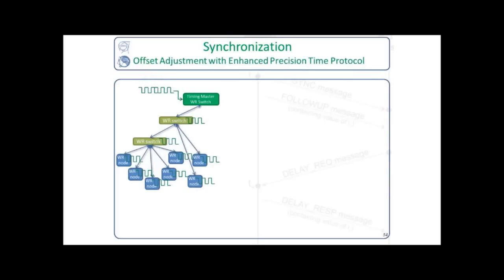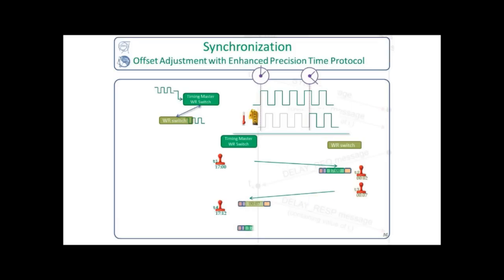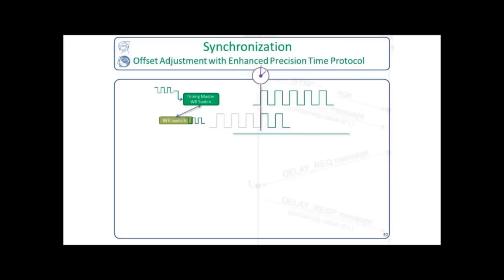And it's here when the precision time protocol comes in. So, let's focus only on two devices, the master and the switch. Here is the first rising edge on the master that arrives a bit later to the switch. And also, temperature fluctuations may make this difference drift even further. So, the precision time protocol initiates the exchange of some very precise hardware timestamps between the master and the switch. And the switch gathers messages and timestamps. And after some calculations, it manages to compensate offsets and drifts and calibrate itself to the time of the timing master.